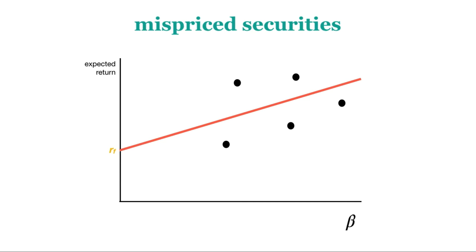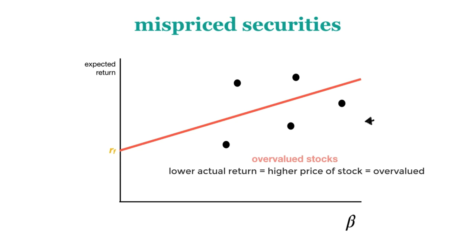If a stock falls in the part of the graph that is under the SML, we say it is overvalued. Take this security for example. According to the CAPM formula, it should, and the investors expect it to, earn a return of approximately 9%, but it is only earning a return of 5%. This means that the price is higher than it should be, given the returns on the asset. The risk-return trade-off is unsatisfactory for investors, so we say it is overvalued and we should sell it.